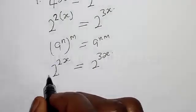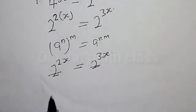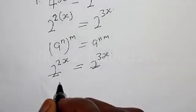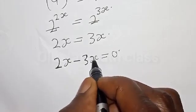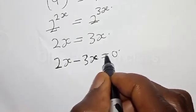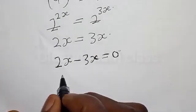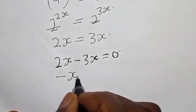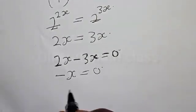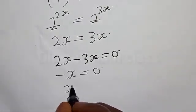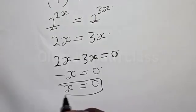Now they have the same base, so the bases cancel. We are left with 2s minus 3s is equal to 0, which gives minus s is equal to 0. Therefore, s is equal to 0. That is our answer.